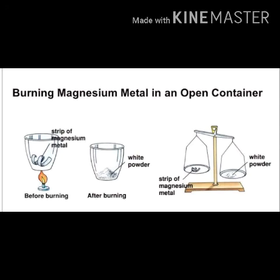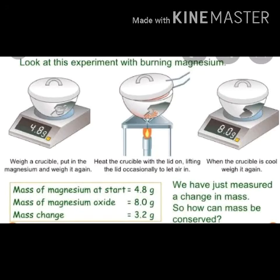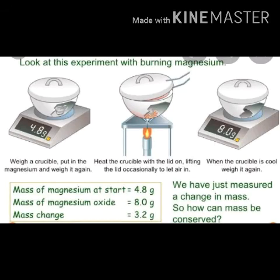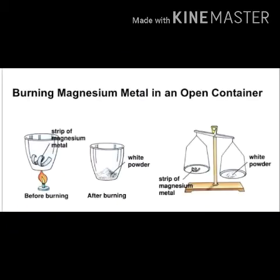There is also a change of mass during burning. When a substance is burned, it combines with oxygen to give one or more products. If the products are collected and weighed, the total mass of all products will be greater than the mass of the original substance. For example, when magnesium is burned, it changes into MgO, demonstrating that a change of mass takes place during burning.